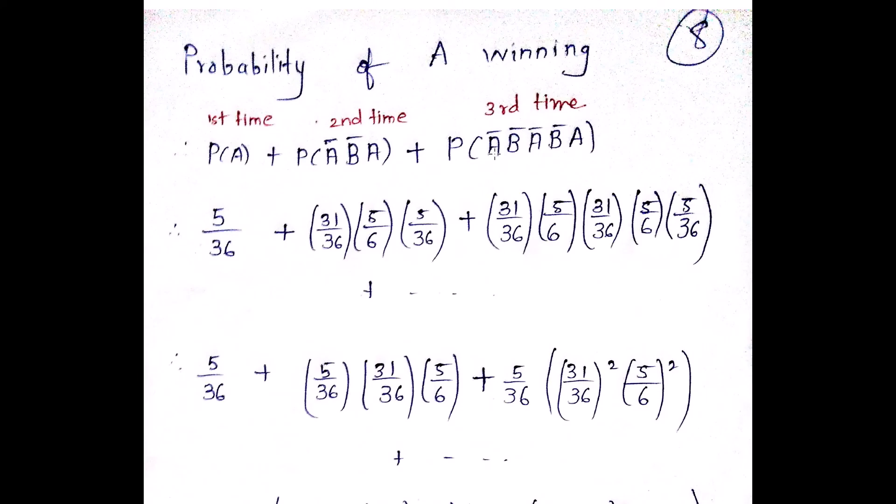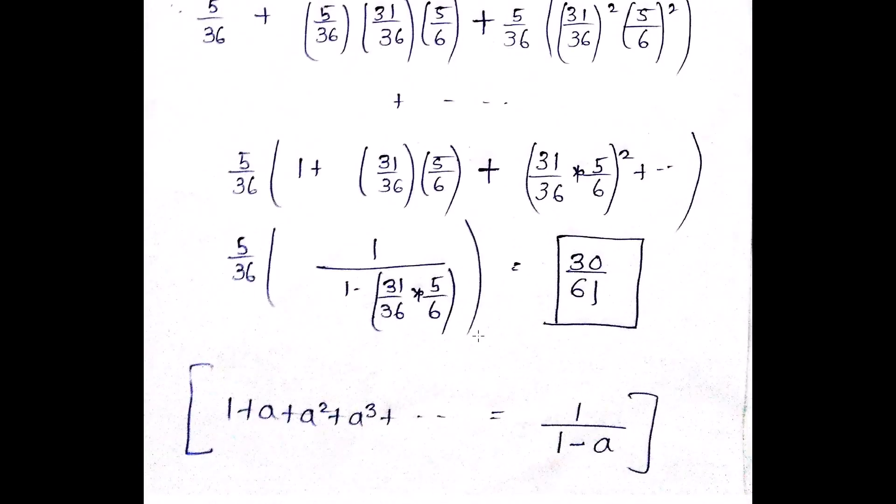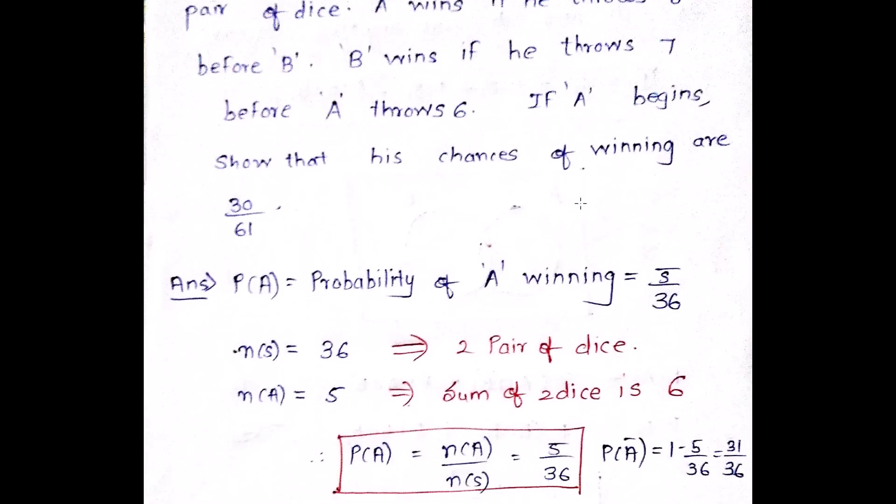In the third time, we have A bar, B bar. In the third time, already A bar, B bar is covered. Again A bar, B bar is covered. And now it is a third A. So you have to just put the values accordingly. Just solve it mathematically. And you will get the final answer as 30 by 61, which is what we have to prove.